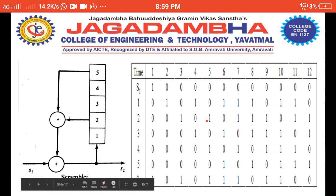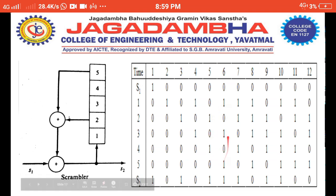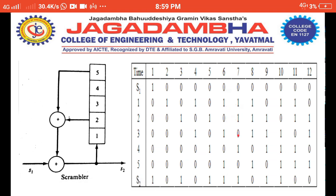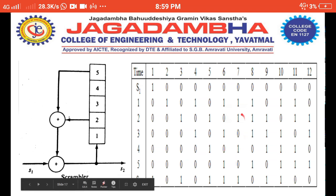Continuing: 0 XOR 0 = 1 XOR 0 = 1. Then 0 XOR 0 = 1 XOR 0 = 1. Then 1 XOR 0 = 1 and 1 XOR 0 = 1. So the scrambled bits generated so far are: 1, 0, 1, 0, 1, 1, 1. Each result is shifted through positions 1→2→3→4→5 before the next operation.